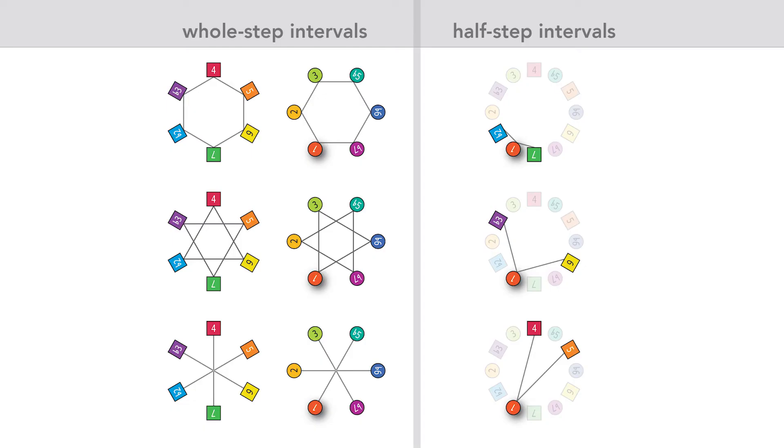And what's even cooler is that these same patterns are consistent from one key to the next. So when you shift the scale degrees to highlight, say, the key of G, the same interval patterns appear. Highlighted, of course, by the same color patterns as well.